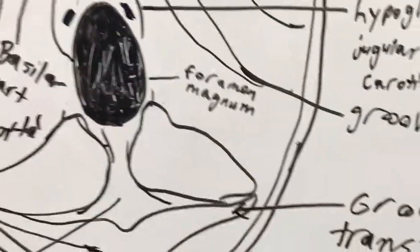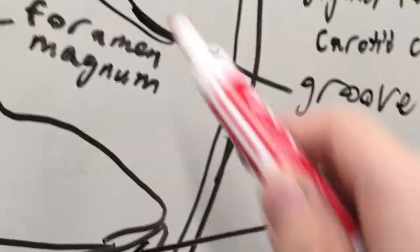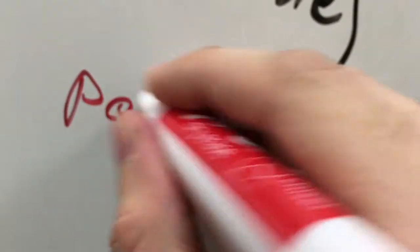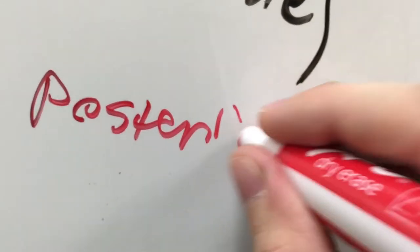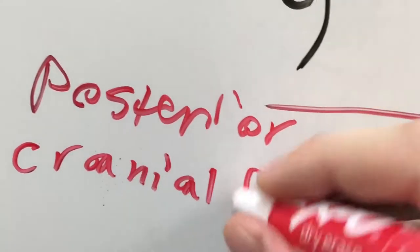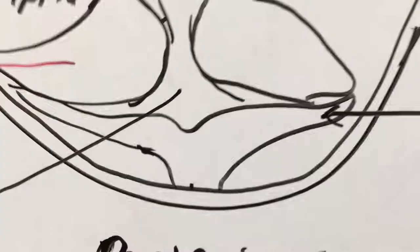Foramen magnum, we already covered that. Here we have the groove of the sigmoid sinus. And this one I forgot to label. These are the posterior cranial fossa. That is where your cerebellum rests. So that's cool.